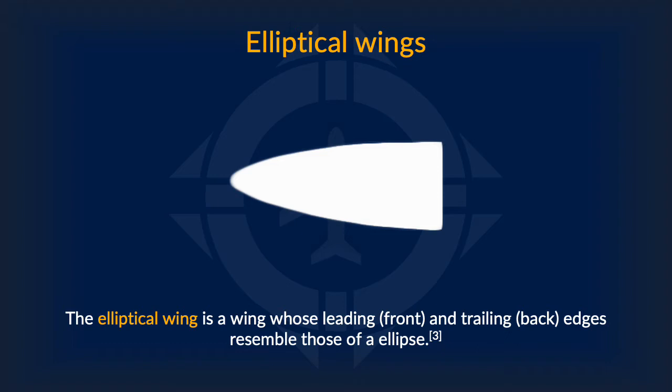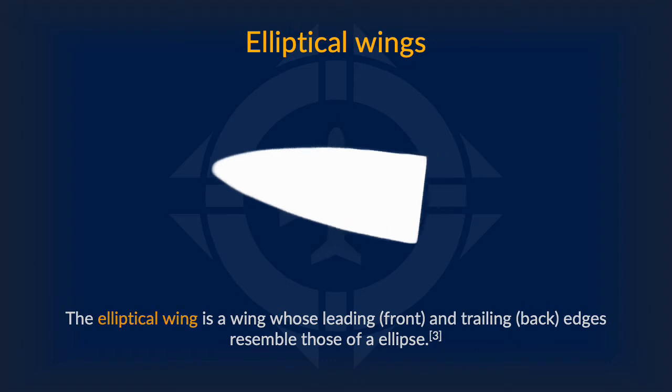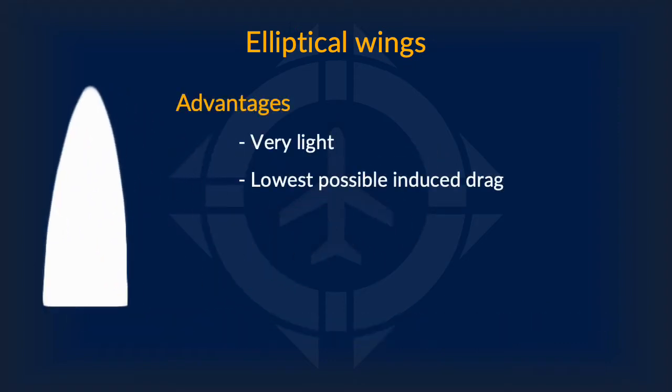Next up, we have the elliptical wing. Elliptical wings are wings whose leading and trailing edges resemble that of an ellipse. The advantages of an elliptical wing are weight and speed. It was designed with the idea of reducing induced drag as much as possible. It is a very light wing and has the lowest possible induced drag out of all planforms due to the tip being very small.